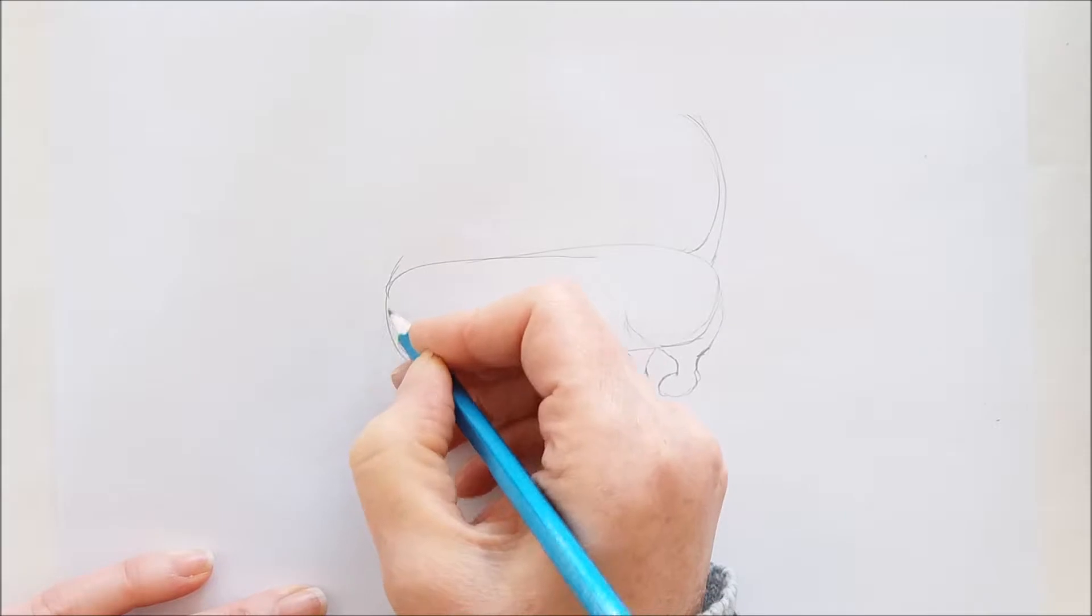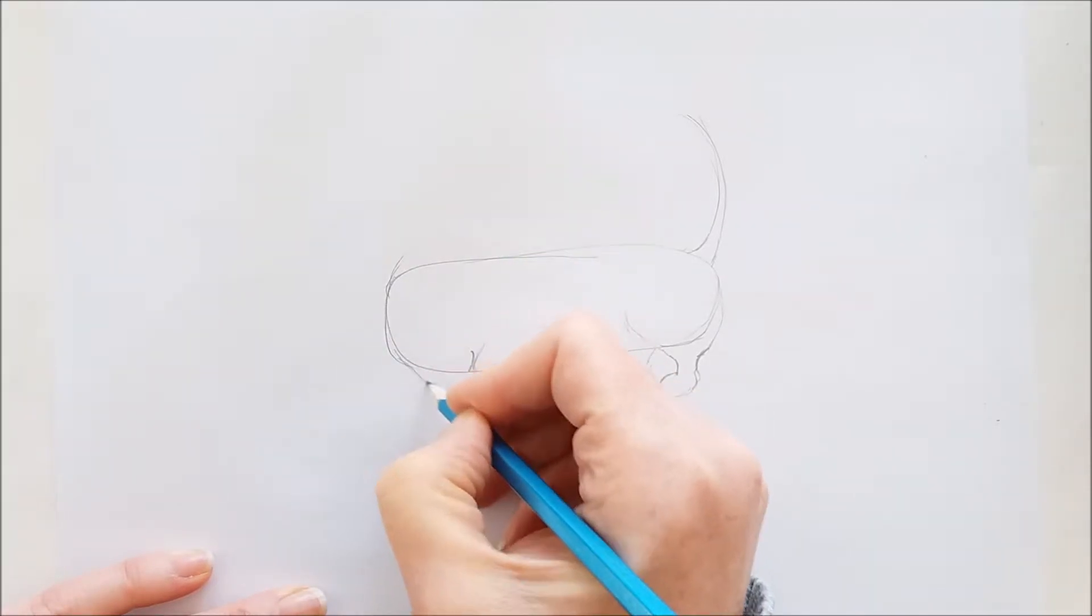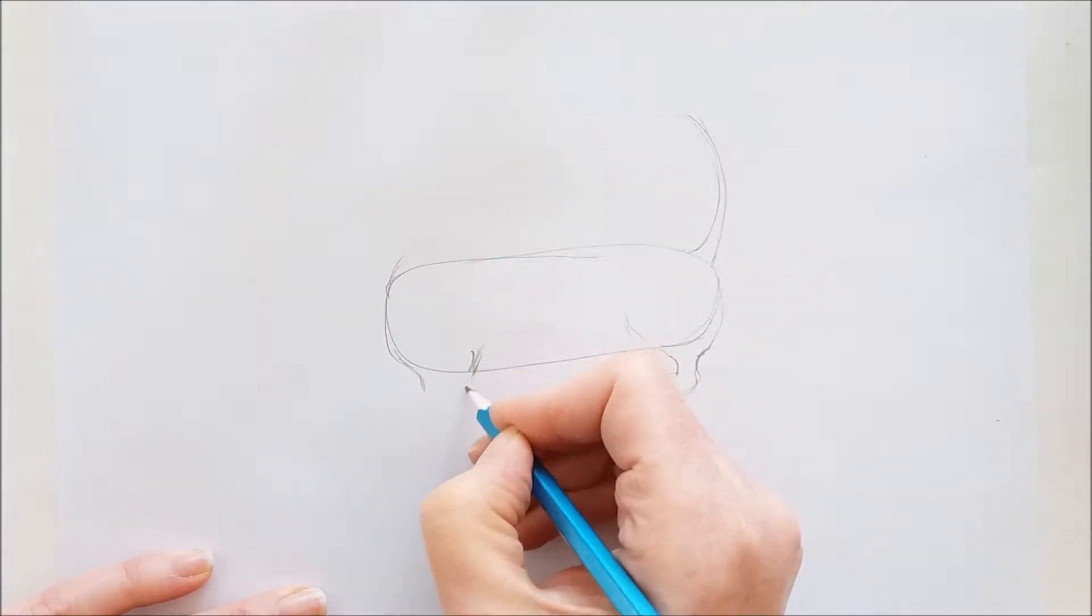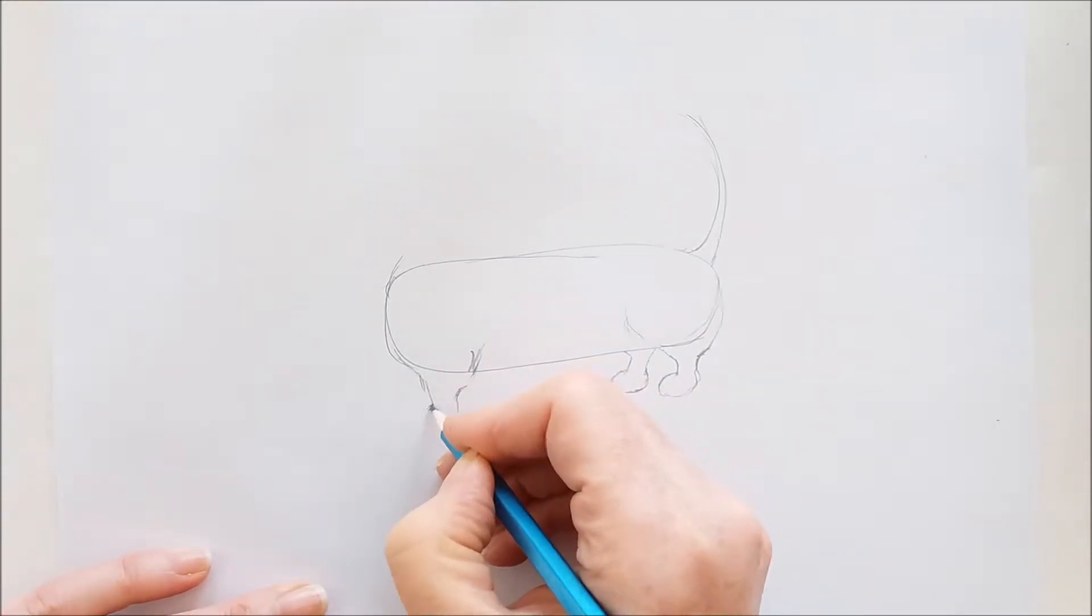We'll do the same thing up here in the front. I'm just going to draw two little short lines down and then I'm going to draw kind of a ball shape for the foot.